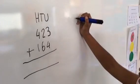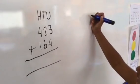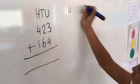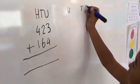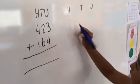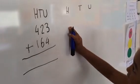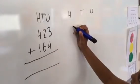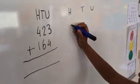Next we are going to do our HTU again but leave spaces. Then we partition the numbers into hundreds, tens and units.